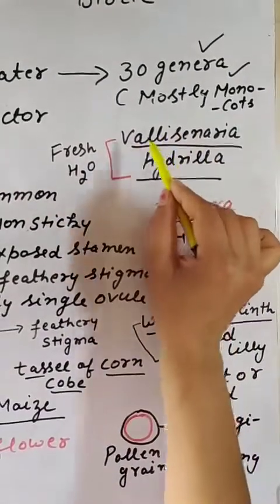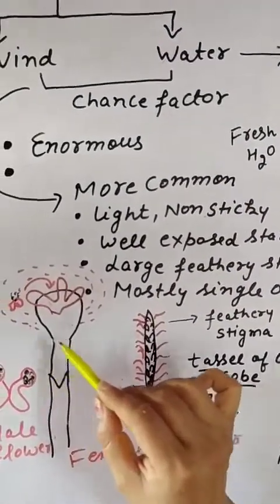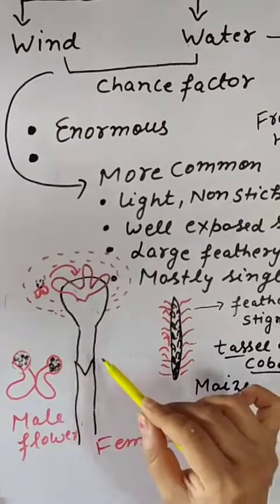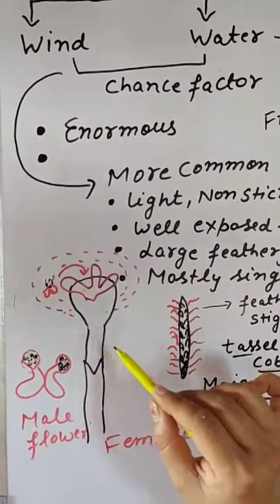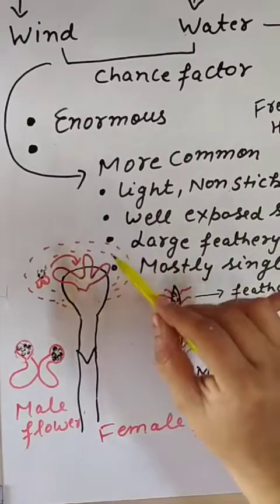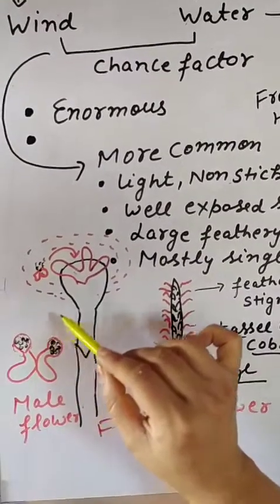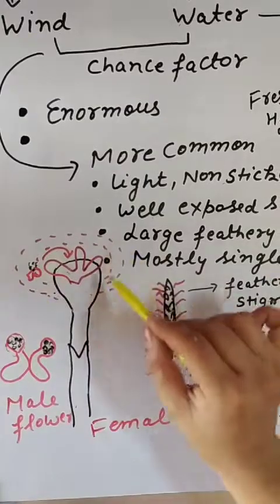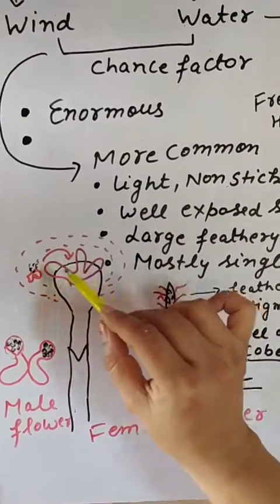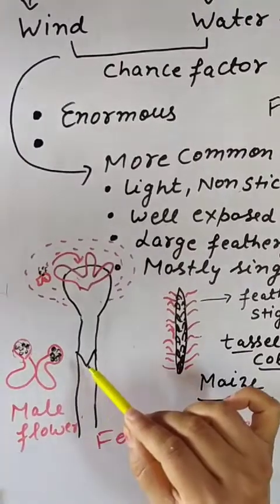Vallisneria is a type of plant in which the female flower has a stalk-like structure and is present inside the water. But when it is time for pollination, with the help of the stalk, the female flower moves to the surface of the water. Pollen grains or the male flower are released on the surface of the water, and with the help of water current, the male flower goes around the stigma of the female flower, and pollination takes place.